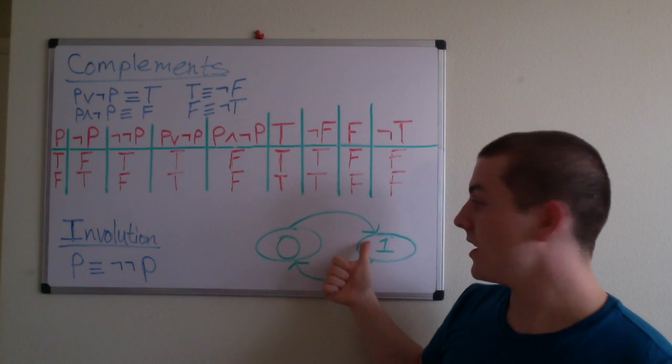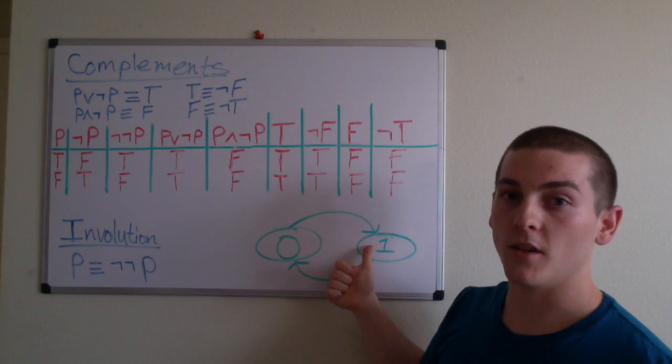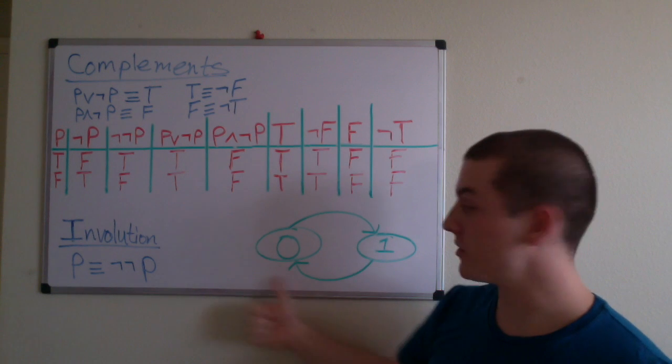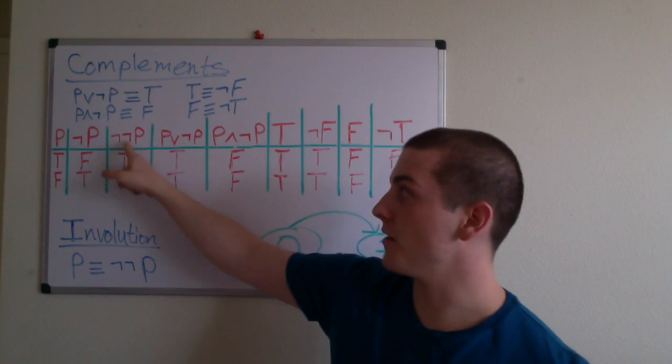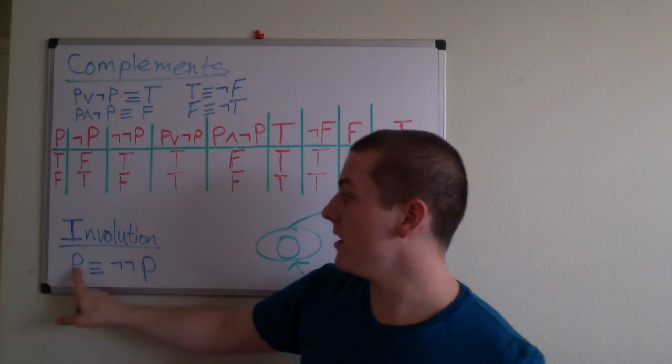If we feed not P through the function, it will bring us back to state 0, which is P, or known as not not P. So P is logically equivalent to not not P. That's what involution tells us.